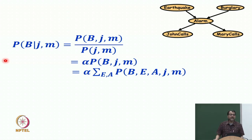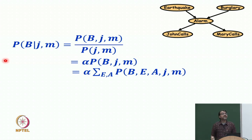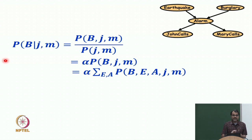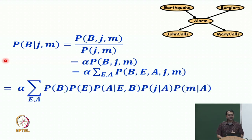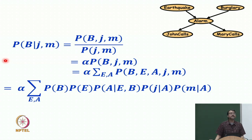Now we need to do this computation; we can write a computation graph for it. For example, to compute the probability of B=true, I will multiply P(B=true), then sum over E with P(E) and P(¬E), then given E=true compute P(A | B, E) and P(¬A | B, E) as I sum over A, then J given A, M given A, J given ¬A, M given ¬A, and so on. You can take a recursive equation and keep computing with sum nodes and product nodes.